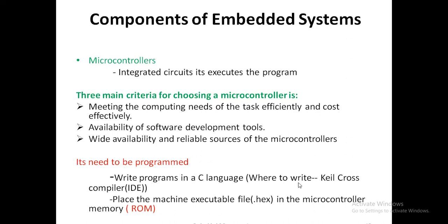Where to write the program? With the help of the Keil cross compiler — it is an IDE, an Integrated Development Environment. In this only you can write Embedded C programming. The purpose of this Keil cross compiler is to convert your high-level language program — that is C — into a machine executable file with the extension .hex. The Embedded C file has extension .c, and the machine executable file is .hex.